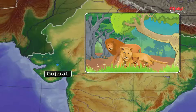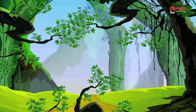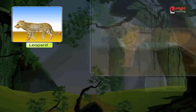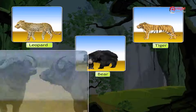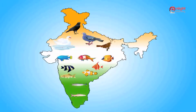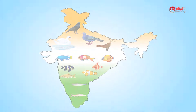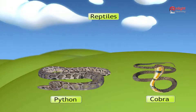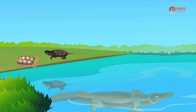The deciduous forests are the home of leopards, tigers, bears, wild buffaloes and boars. In India, we have a large variety of fish and birds. Reptiles such as snakes, pythons and cobras are found all over India. Crocodiles and tortoises are found in most Indian rivers.